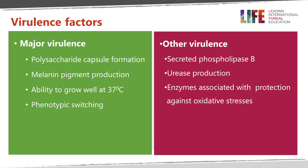The virulence factors that enable this organism to be a major pathogen are the capsule, and the presence of melanin as a pigment in the cell wall, which makes the cell wall very robust. This is a thermotolerant organism — it grows well at 37 degrees and can also undergo a phenomenon called phenotypic switching. Other pathogenic determinants include the ability to secrete phospholipase B, to produce urease, and a variety of enzymes associated with protecting the organism against oxidative stresses present in tissue and in host effector cells.